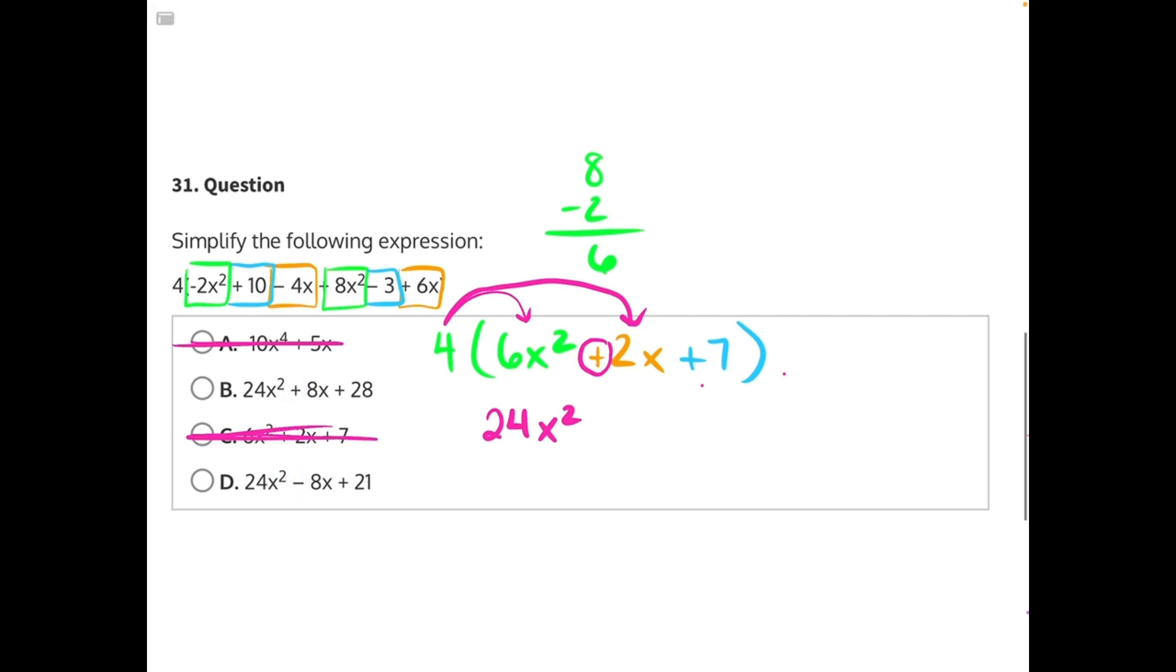So at that point, you could mark B as your correct answer and keep moving on with the test. But for the sake of the video, 4 times 2x would give us positive 8x, and then 4 times 7 would give us 28, making B our correct answer.